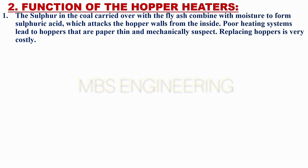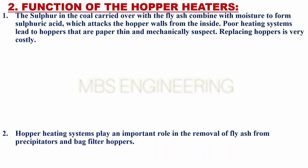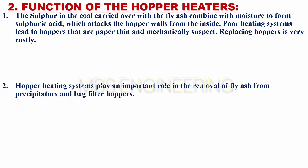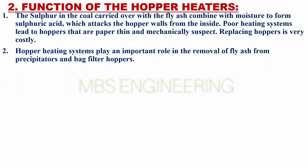The sulfur in the coal carried over with the fly ash combines with moisture to form sulfuric acid, which attacks the hopper walls from the inside. Poor heating systems lead to hoppers that are paper-thin and mechanically suspect. Replacing hoppers is very costly.